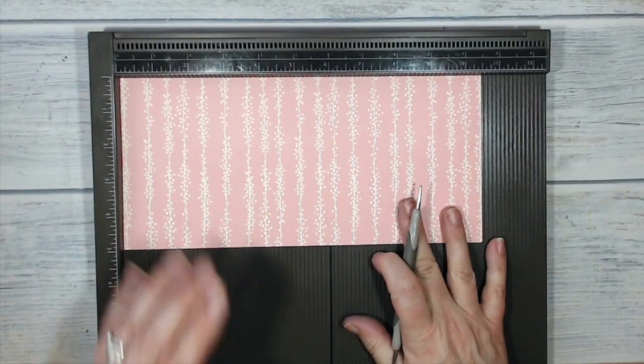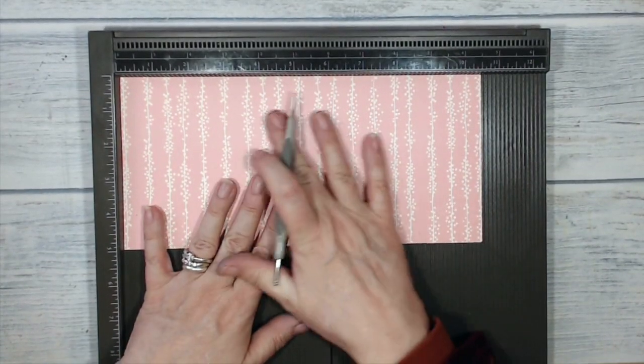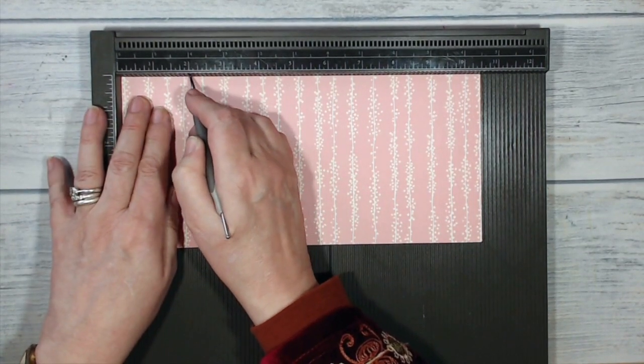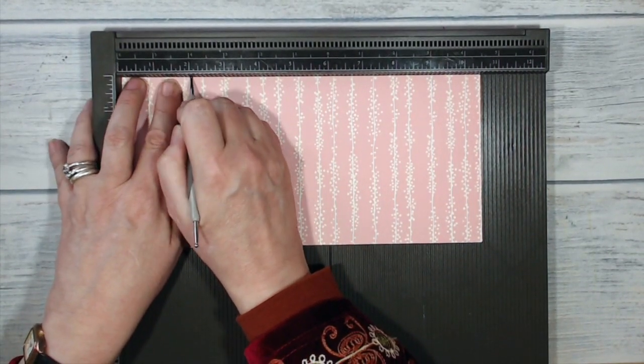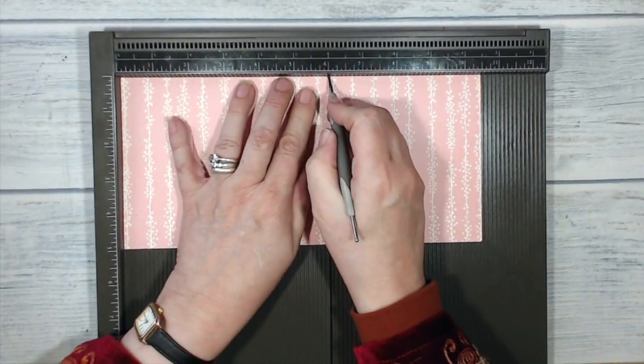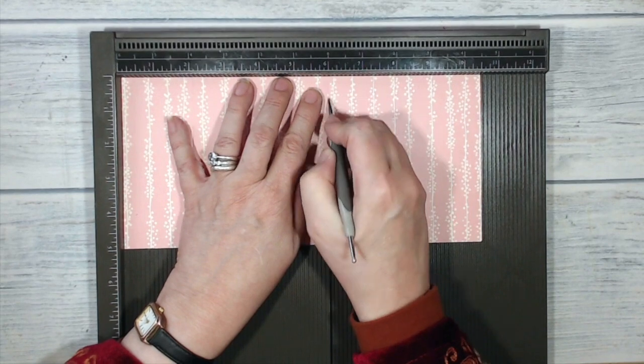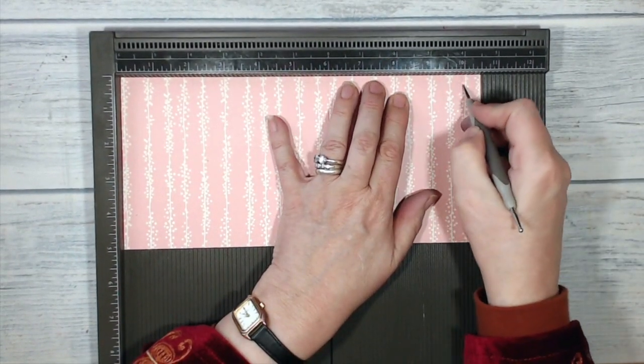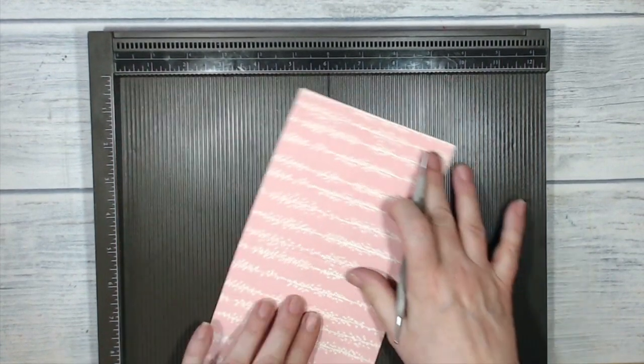I'm going to do my scoring on the non-foiled side of the card on the long edge at two inches, four inches, six inches, eight inches, and finally at ten inches.